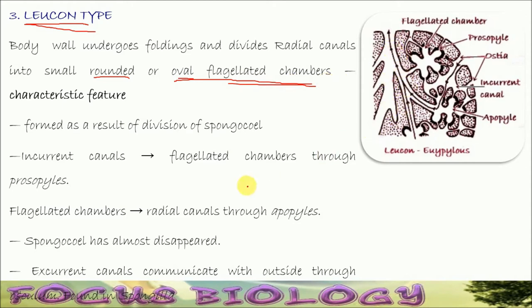Here, the spongocoel has almost disappeared — no spongocoel. This one is the ostia. Water enters through this ostia into incurrent canals, and from the incurrent canals it comes into the radial canals or excurrent canal. These are oval chambers, and the excurrent canal leads into the osculum.